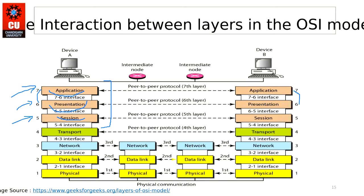The Transport layer is the responsibility of the network administrator. It handles connections that need to be built with other devices. Data from the Session layer arrives at the Transport layer, which adds its header and converts the data into segments. The Transport layer supports two protocols: TCP (Transmission Control Protocol) and UDP (User Datagram Protocol).